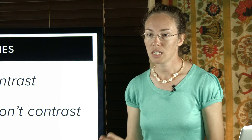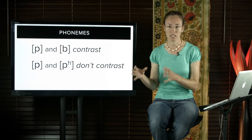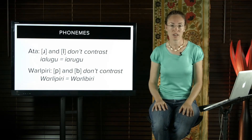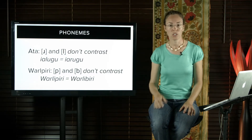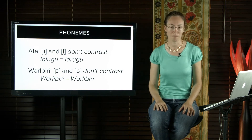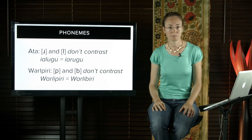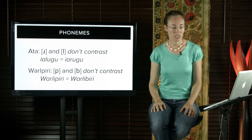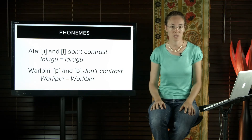For sounds to contrast, they need to be separate sounds and they also need to distinguish meaning. English has a set of sounds that contrast, but other languages have different contrasts. In Aata, r and l don't contrast, so they are not functionally separate — you can say 'yalugu' or 'yarugu' and it is the same word with the same meaning. In Walpiri, p and b don't contrast, so you could say 'walpiri' or 'walbiri'. In Thai, p and aspirated p do contrast — 'pa' means forest and 'pa' means split. They're separate words, a minimal pair.